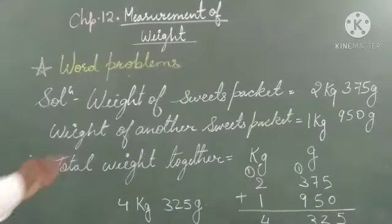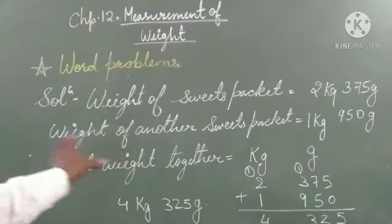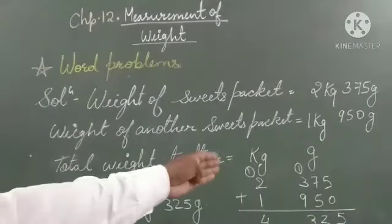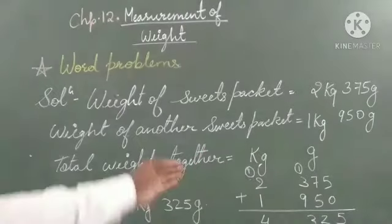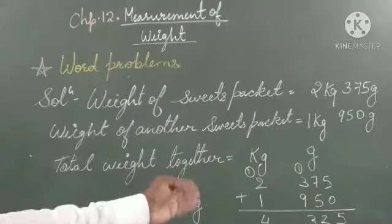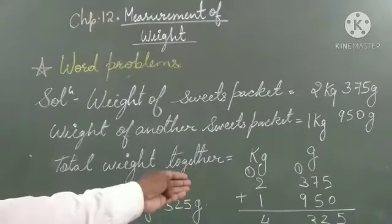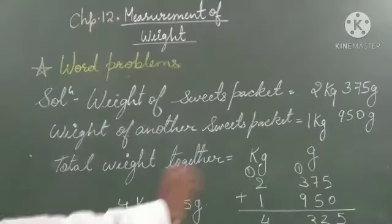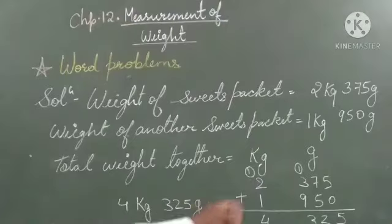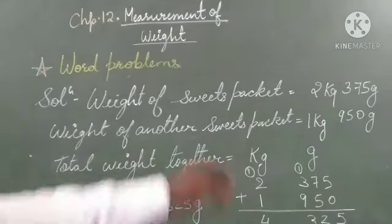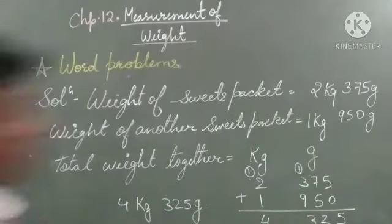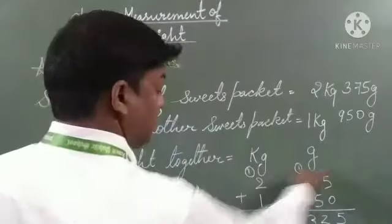Then total weight together. So I will regroup kg and gram. 2 kg 375 grams plus 1 kg 950 grams. So we will add right to left.